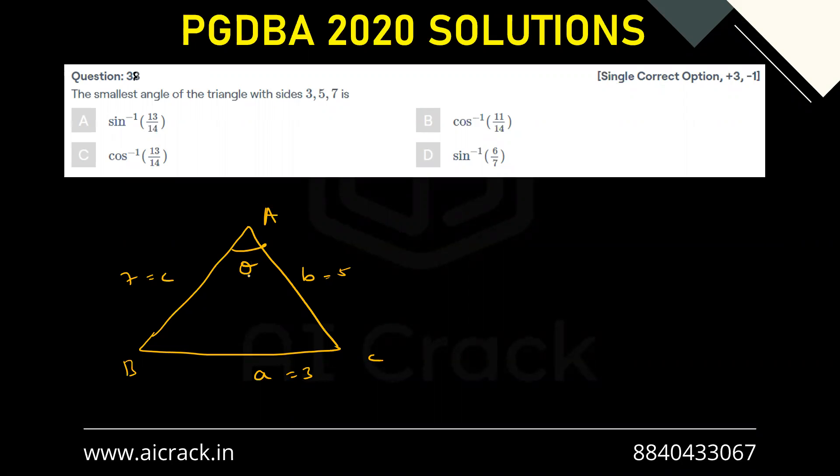Now we have to find out this angle. So we can find out this angle with the help of cosine rule. So cos theta, with the help of cosine rule, cos theta is summation of the squares of the adjacent sides.